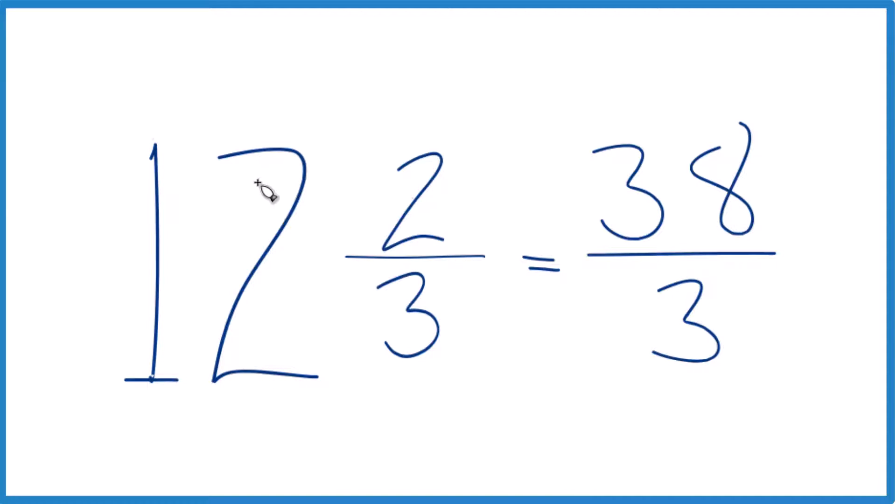Let's do it again. 12 times 3, that's 36. 36 plus 2, that's the 38. We just brought the 3 across, and that's our improper fraction for the mixed number 12 and 2 thirds.